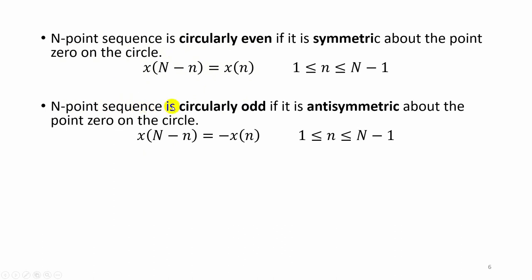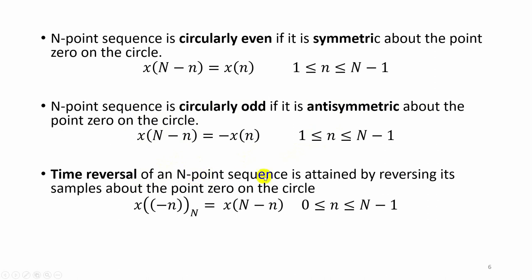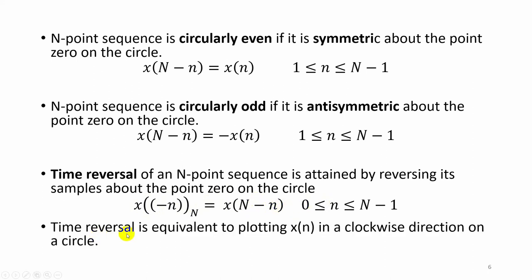The N-point sequence x of n is circularly odd if it is anti-symmetric about x of 0; in that case x of capital N minus n is equal to minus x of n. Time reversal of an N-point sequence can be obtained by reversing the samples about the point 0 on the circle, given by x of minus n modulo N which is equal to x of capital N minus n. Time reversal is equivalent to plotting x of n in the clockwise direction on the circle.